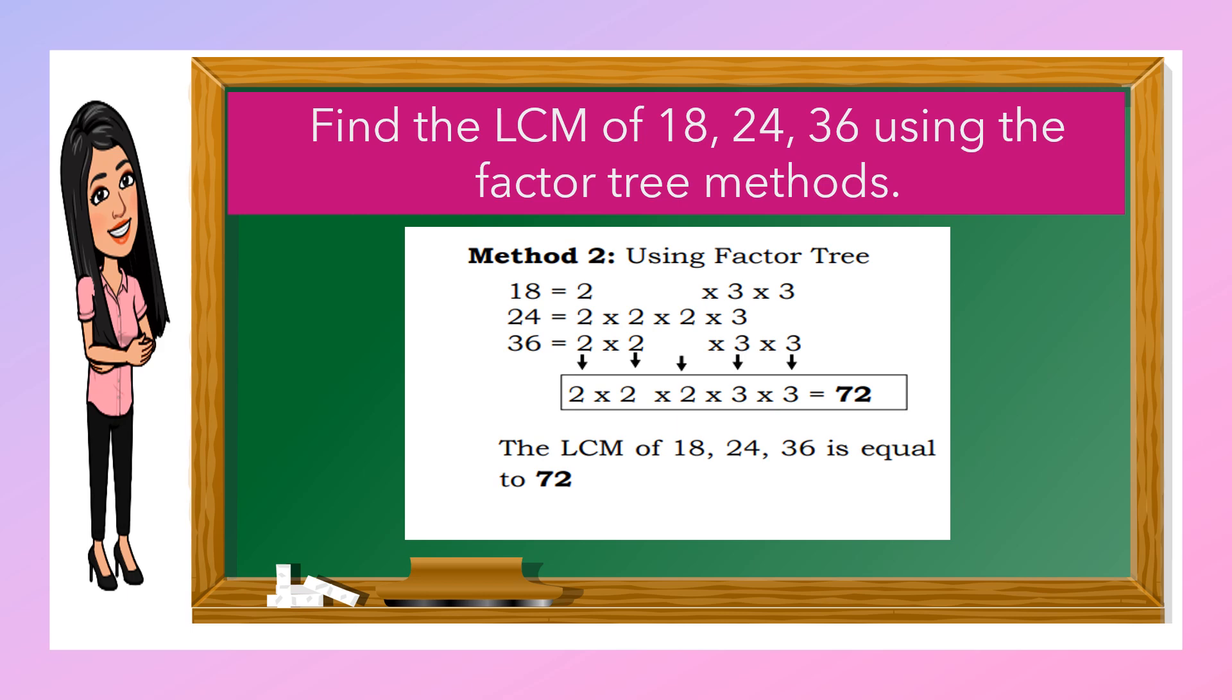The next method is using factor tree. We have 18, we breakdown into prime factors. So, 18, we have 2 times 3 times 3. In 24, we have 2 times 2 times 2 times 3. In 36, we have 2 times 2 times 3 times 3. This time, you need to align the same answers. So, if you notice, in our given 18, 24, 36, we have the same 3 twos: 2, 3, and 3.